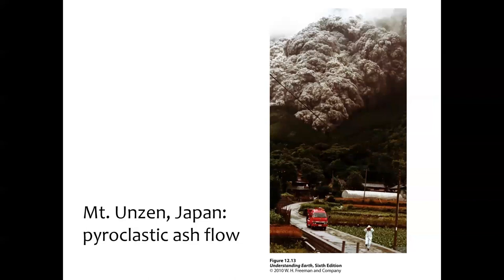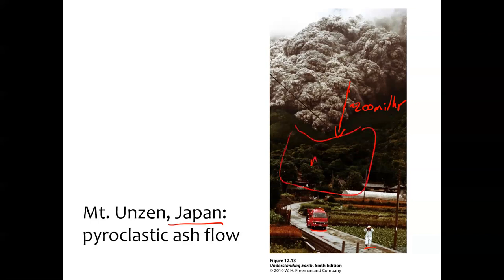Here's an example from an eruption at Mount Unzen, Japan, of one of these pyroclastic ash flows. This ash cloud is much denser than air, so it flows downslope — and it flows very fast, something like 200 miles an hour. Hopefully the people in this picture survived, since we found a picture from it, which indicates the cameraman probably survived. But anybody that's up in the path of that flow is not going to survive.